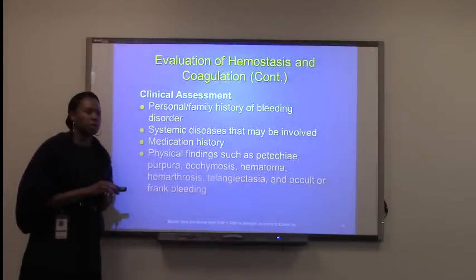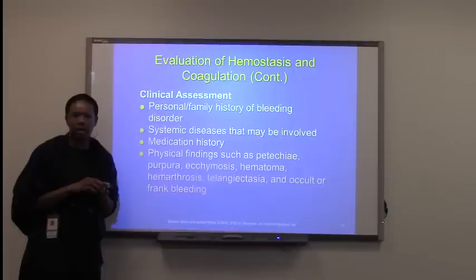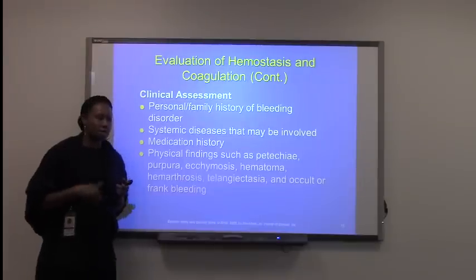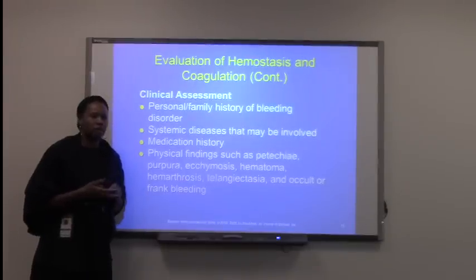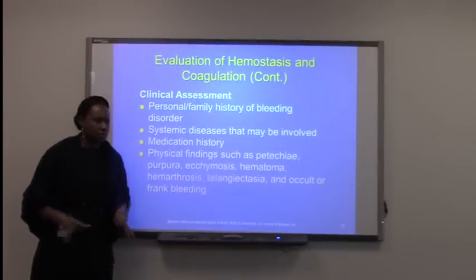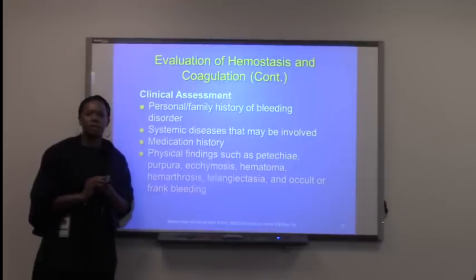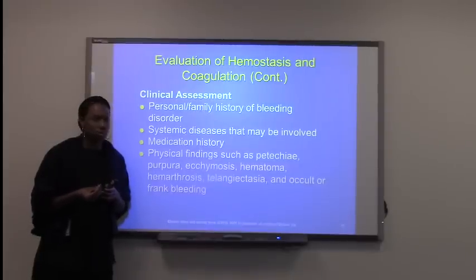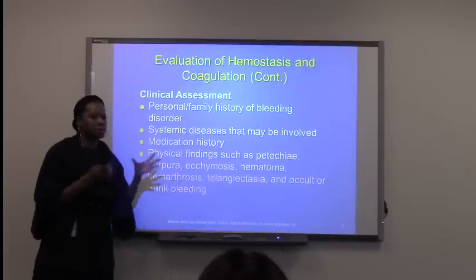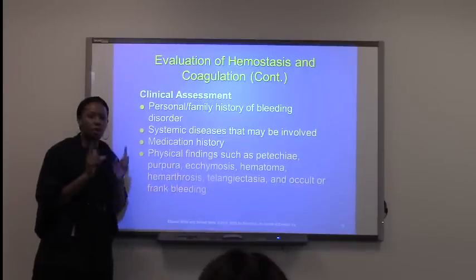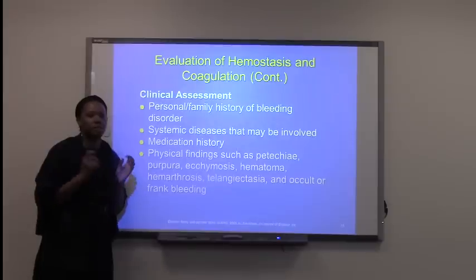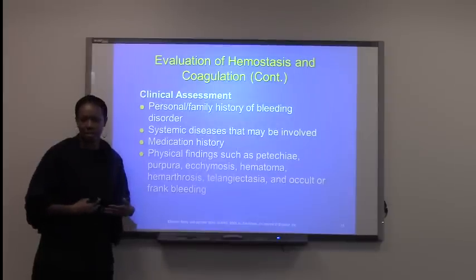Occult blood is what we call hidden blood. It most often comes from a disease process occurring in the body — for example, colorectal cancer. A sign of this is dark tarry or dark black stool. That dark stool is occult blood — it's dark in color and considered hidden because it comes from a hidden disease process in the body.